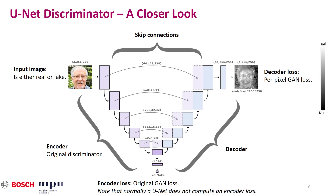The left half of this figure corresponds to the original GAN discriminator that we took as a baseline for our experiments, consisting of six ResNet blocks. We then add a decoder, which is made of the same ResNet blocks, but the input channel sizes are doubled thanks to the skip connections between encoder and decoder. We continue to compute the original GAN loss at the encoder output. Note that normally a U-Net does not have an encoder loss. For the decoder loss, the loss is computed per pixel.